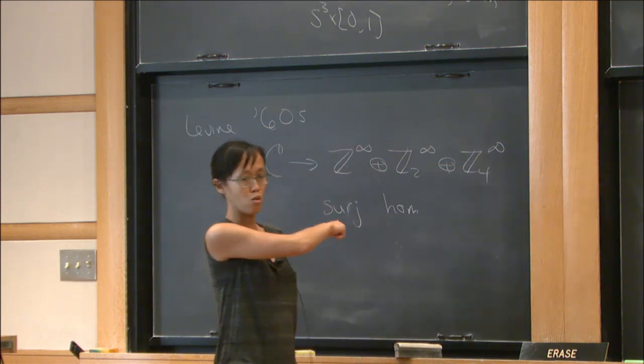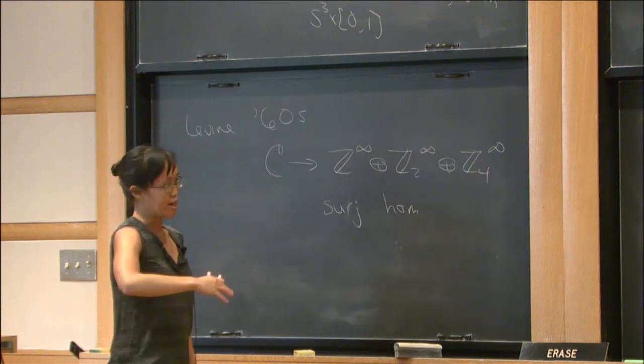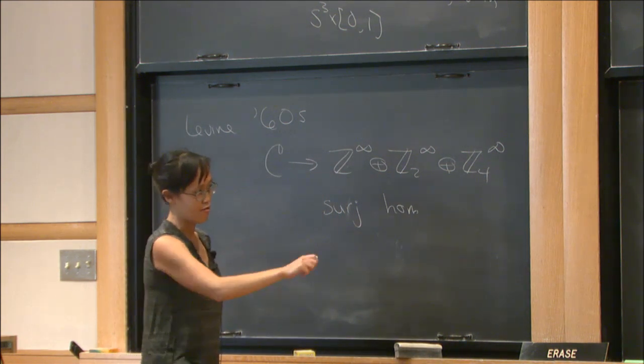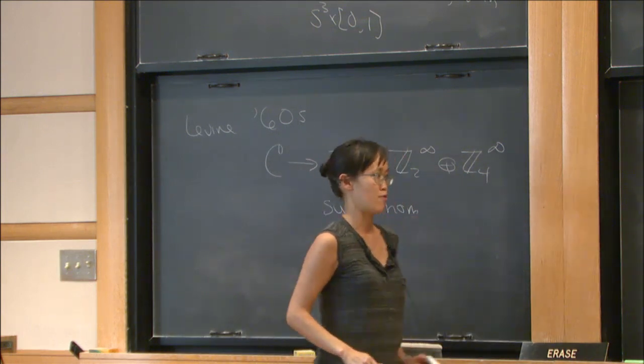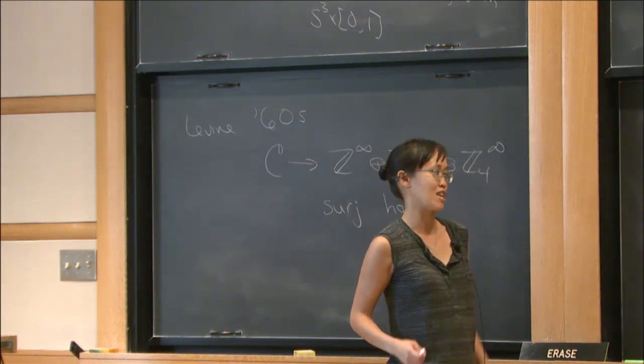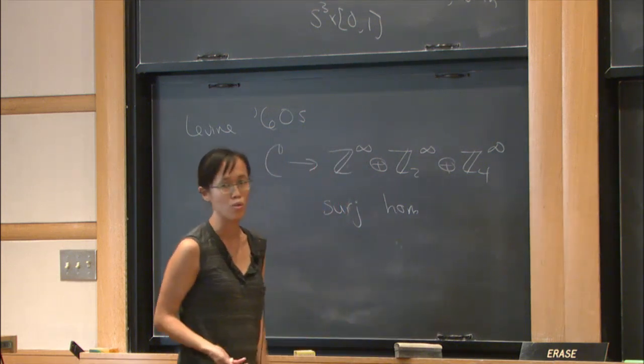In fact, all known torsion in the concordance group is concordant to a knot that is isotopic to the reverse of the mirror image. So basically, the obvious type of two-torsion is roughly the only known two-torsion in the group.